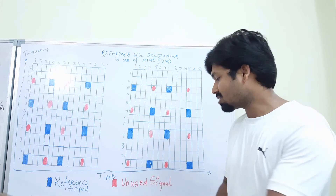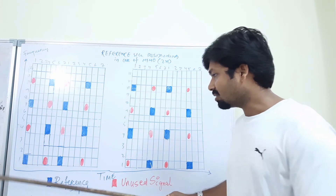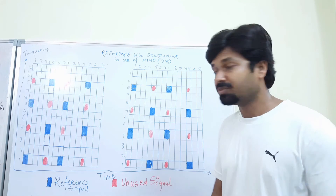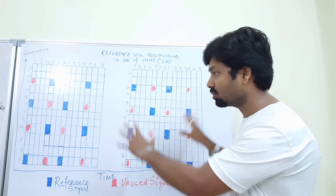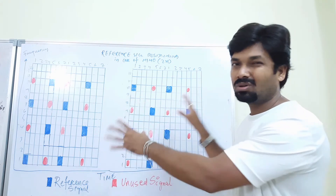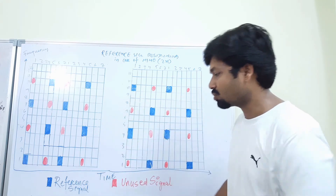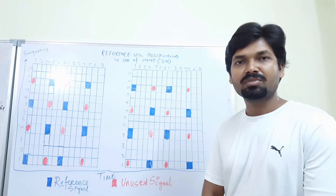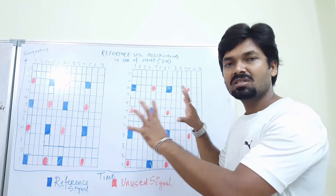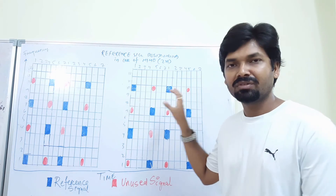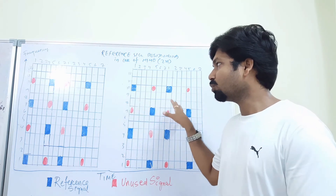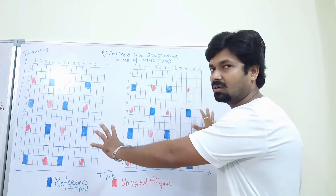This is one pattern — I have just taken an example for your understanding of how in the MIMO case the reference signal is transmitted in both ports, but logically they are one scheduling block or two contiguous resource blocks. This is just an example of one resource block; we can see the whole spectrum behaving this way with two different ports.